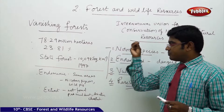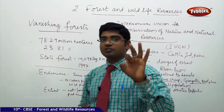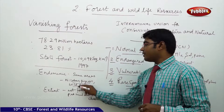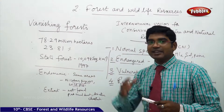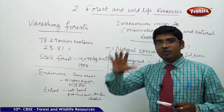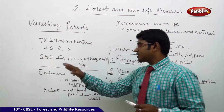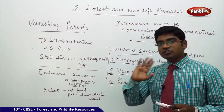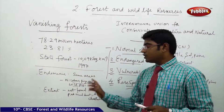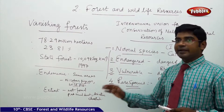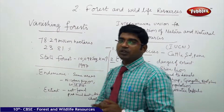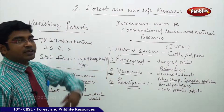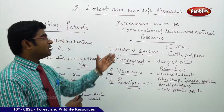The fifth category is Endemic, meaning animals found only in a particular place or spot. Examples include the Nicobar pigeon and wild pigs. The sixth and final category is Extinct — animals that were once found in a region but are no longer present there. Examples include the pink-headed duck and the Asiatic cheetah.